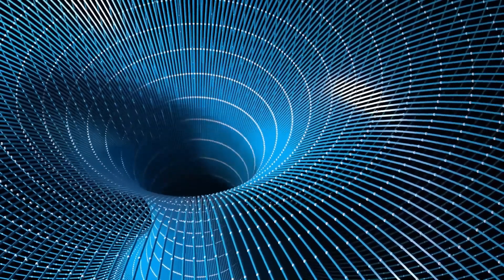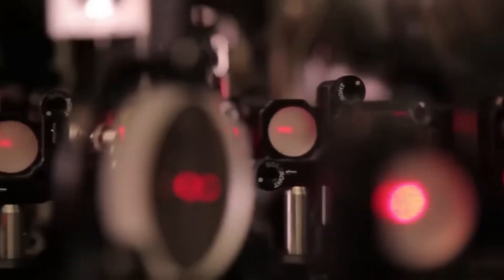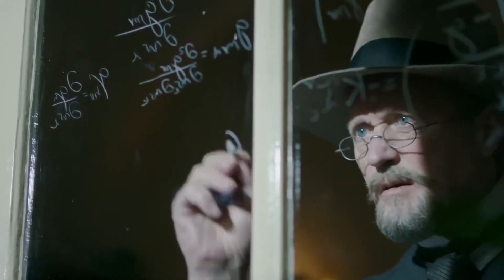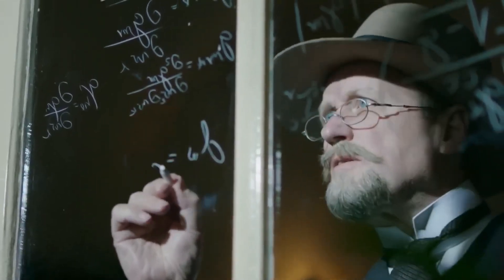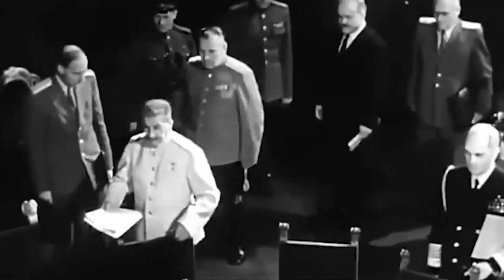But if Planck was right—if energy truly comes in packets—then that would mean light, which seemed so smooth and continuous, might actually be a stream of particles. After Planck published his idea of energy packets, most of the scientific community dismissed it as a mere mathematical convenience. But one man saw something deeper in that trick: Albert Einstein.